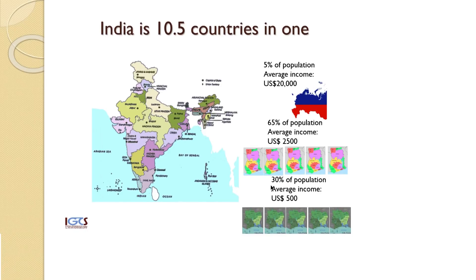So one way of thinking about India is that we are actually ten and a half countries. That actually gives us something to ponder as to who is being affected when certain policies are being contemplated, and also how relative footprints across the population may vary quite widely.